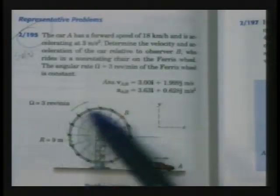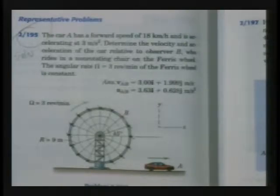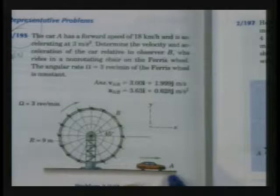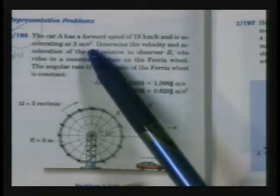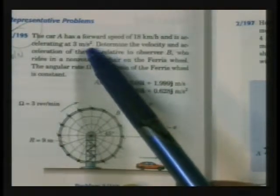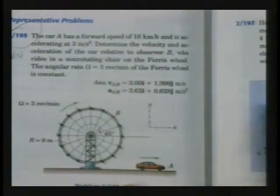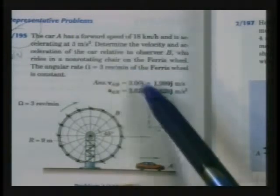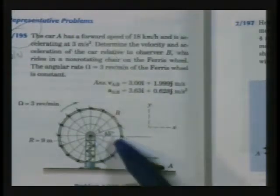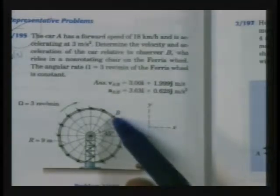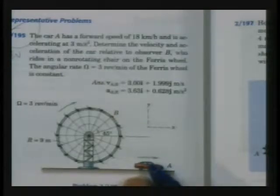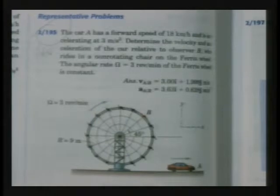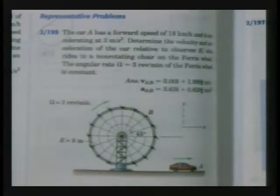That is a fast Ferris wheel. Three revolutions, that's a revolution every 20 seconds. And then at the same time, there's a car. It's a two-dimensional problem. A car moving away from the Ferris wheel, traveling at 18 kilometers an hour. And it's also accelerating at three meters a second squared. And we want to determine the velocity and the acceleration of the car relative to an observer B. And B happens to be in a chair on the Ferris wheel at this particular location at 45 degrees off the horizontal. And that observer is looking at this vehicle moving away and accelerating. Everybody understand the statement of the problem?